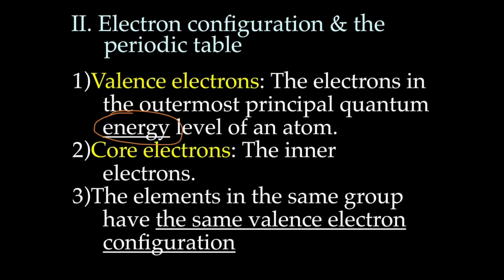And the core electrons are the inner electrons. So if I were to draw the electron configuration of, let's say, we'll pick carbon. We have 1s2, 2s2, 2p6.